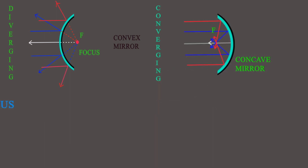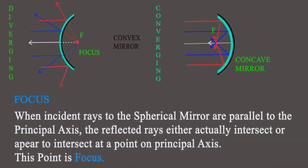So, focus: when incident rays to the spherical mirror are parallel to the principal axis, the reflected rays either actually intersect — for a concave mirror — or appear to intersect — like a convex mirror — at a point on the principal axis. This focus is always on the principal axis, and this point is the focus.